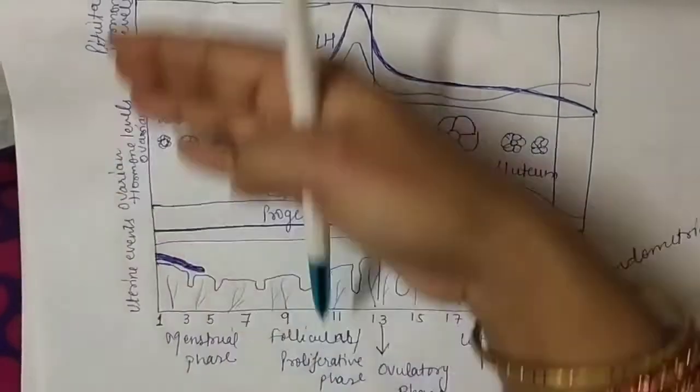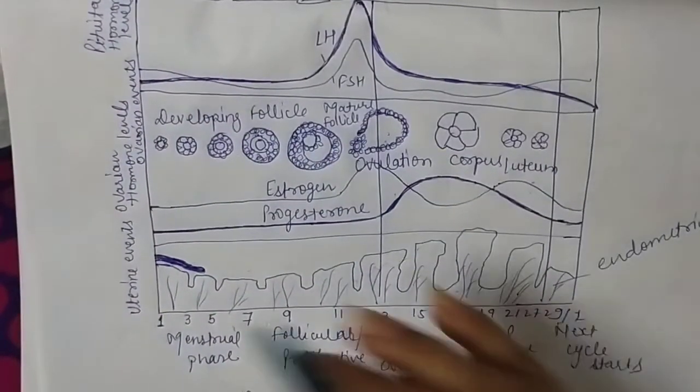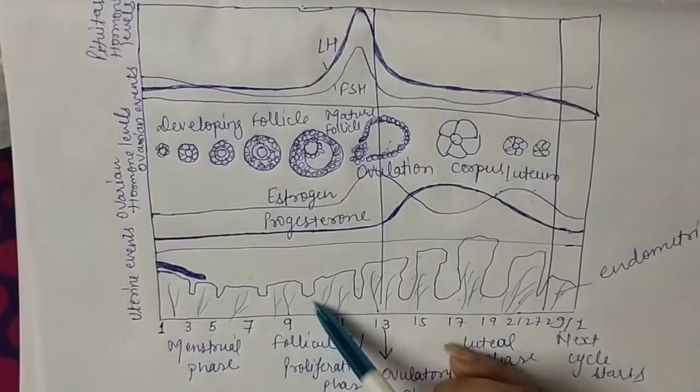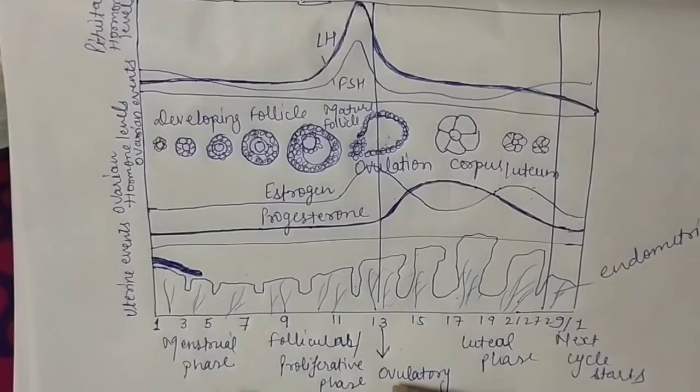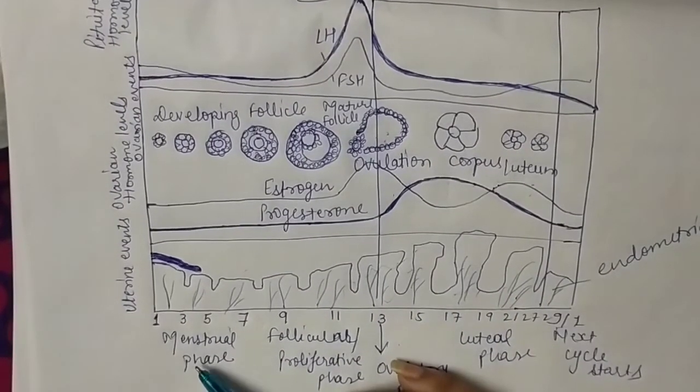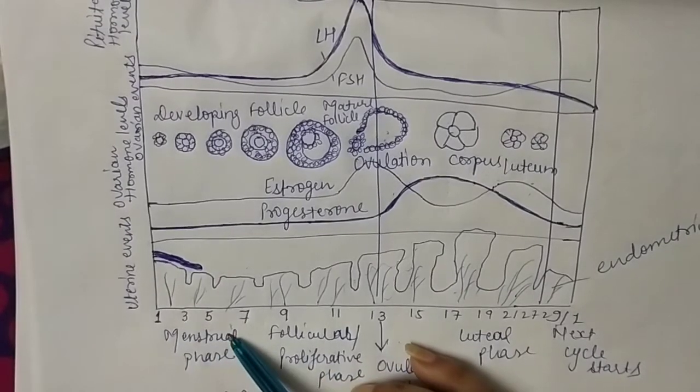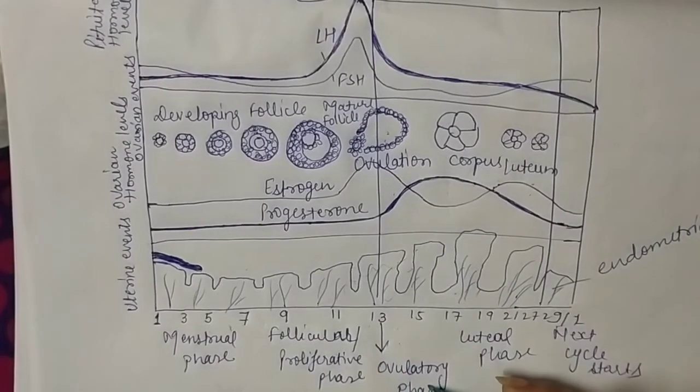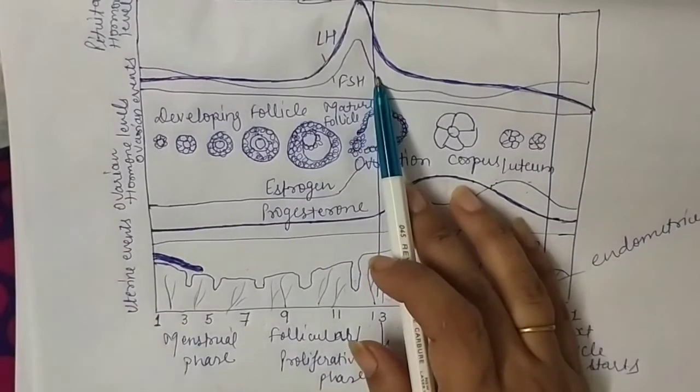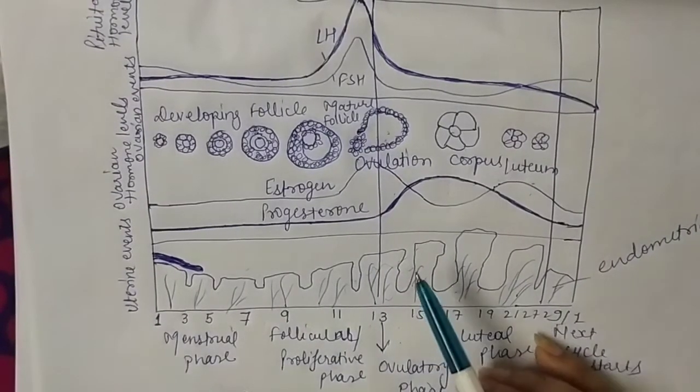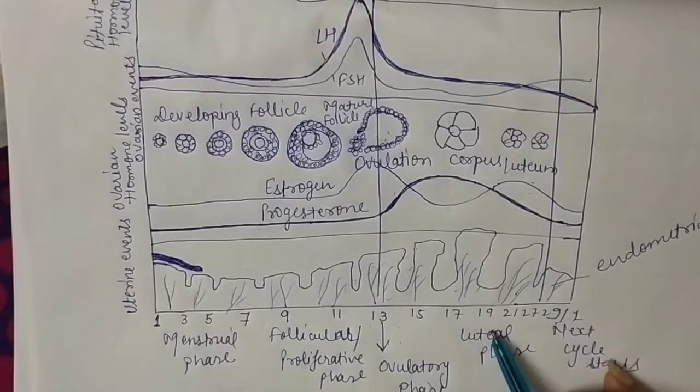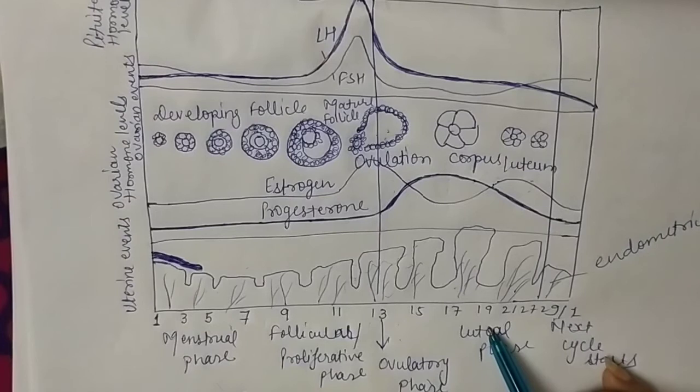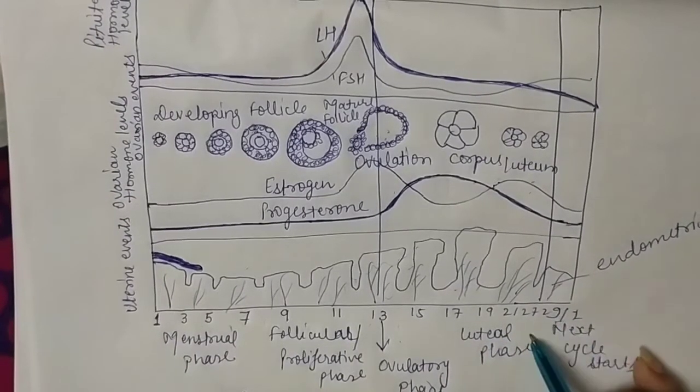You can see many things are written below and on the side. Let me explain all of them. First, uterine events - what happens in the uterus, when bleeding occurs, when endometrium thickens, what phases there are. Menstrual phase lasts one to five days. After that, from day six, follicular phase starts and continues for 11-12 days. Then, due to increased LH level, ova is released. After that, from day 15 to 28-29, luteal phase continues in which corpus luteum forms.